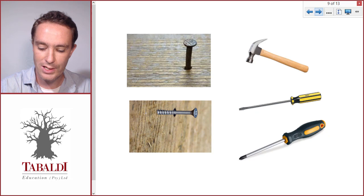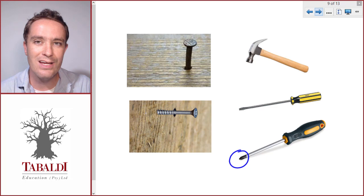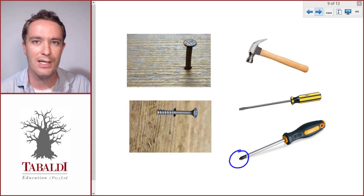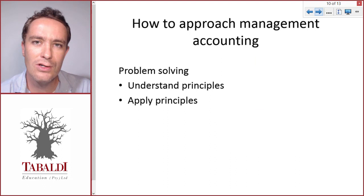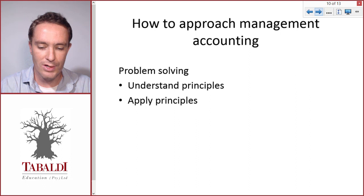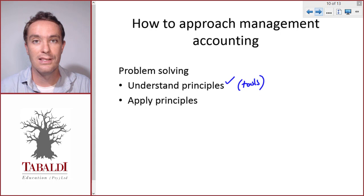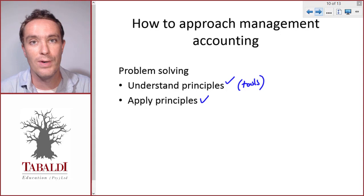You needed practice. The correct screwdriver is the one with the star-shaped point at the end, and you would have learned this through experience. The only way to gain experience in management accounting is to do questions — you have to practice. You'll get it wrong sometimes, but that's how you learn. To recap: management accounting is not something you can just memorize. You need to understand the principles — our tools, our topics — and then apply them to specific problems, which you get through practice and by doing questions.